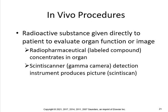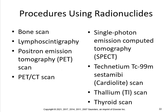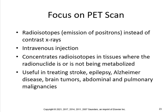A scintiscanner is a gamma camera detection instrument that produces a picture. Key scans to know include bone scan, lymphoscintigraphy, and the PET scan — positron emission tomography. A PET-CT scan combines PET with computed tomography. SPECT stands for single photon emission computed tomography. Other radiopharmaceuticals include technetium, thallium, and thyroid scan. Make sure you know the difference between a PET scan and a CT scan. The PET scan uses radioisotopes that emit positrons instead of contrast x-rays, given by intravenous injection, and concentrates radioisotopes in tissues where the radionuclide is or is not being metabolized.